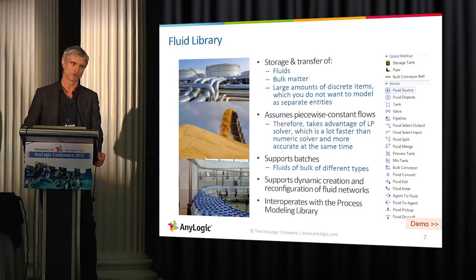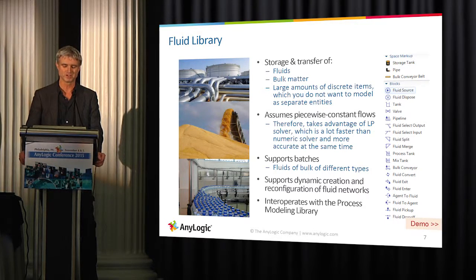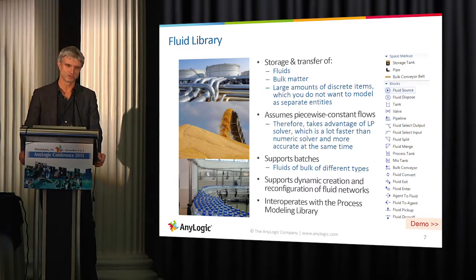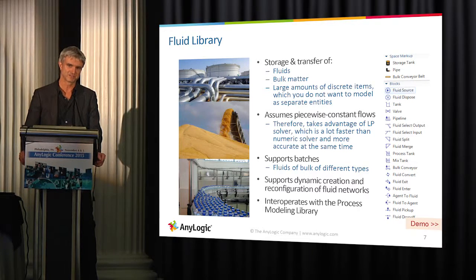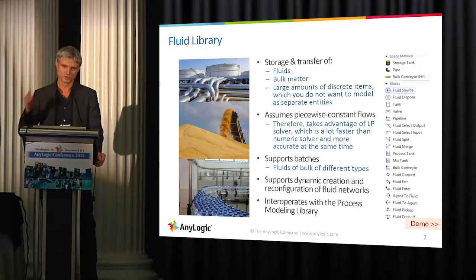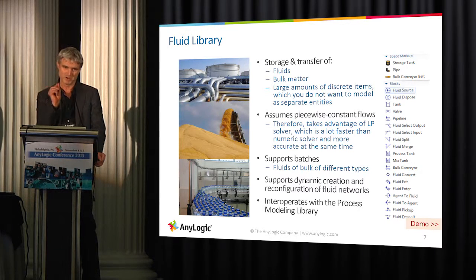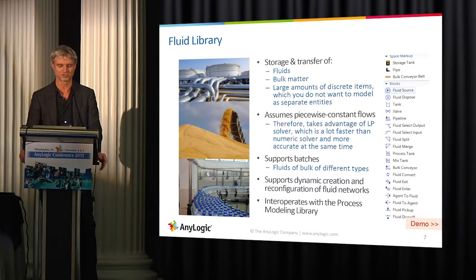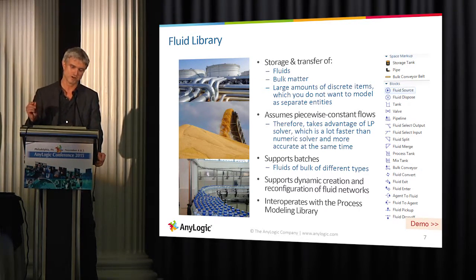System dynamics can deal with more complicated, non-linear dynamics, but system dynamics uses a numeric solver which is a lot less fast than the LP solver, because it goes within micro steps in time. It also loses precision because the precision depends on the size of the microstep.